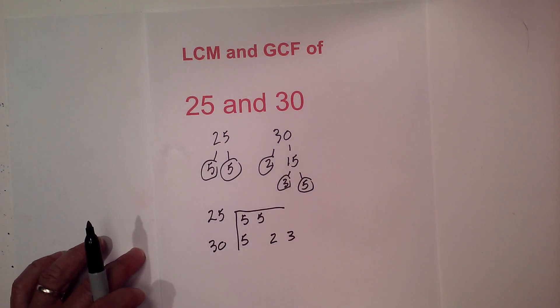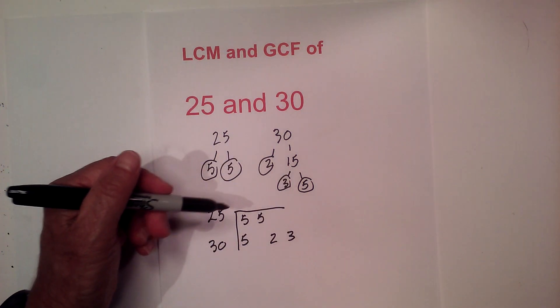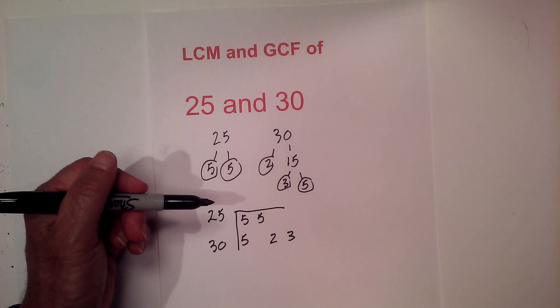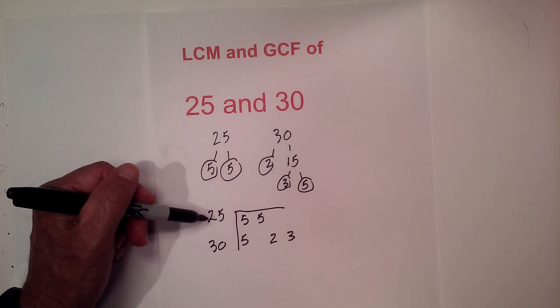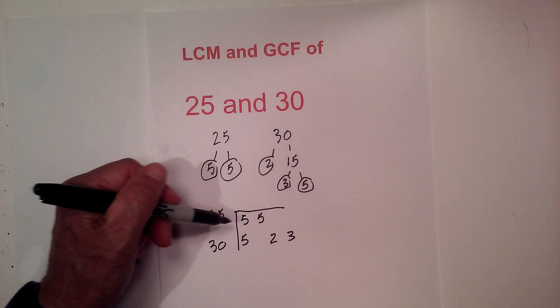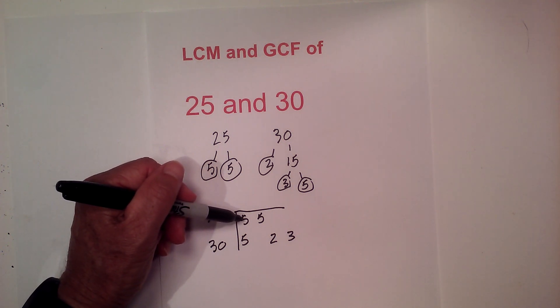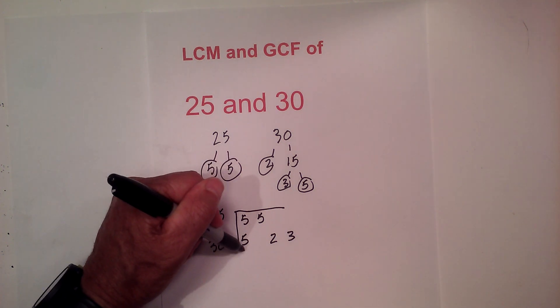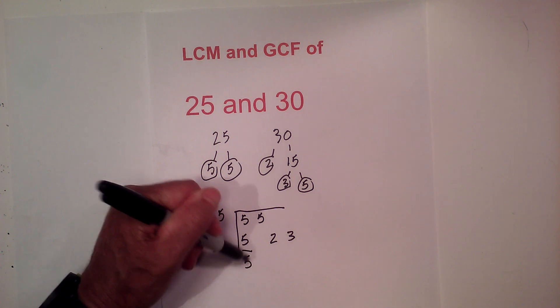Now for the GCF, the rule is you only multiply numbers that are a vertical pair. Since we have two numbers, 25 and 30, you need a matching pair or two numbers. So we have 5 and 5, which is one.